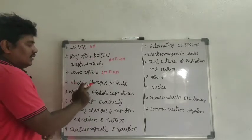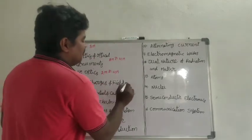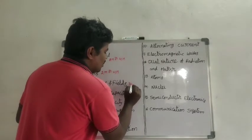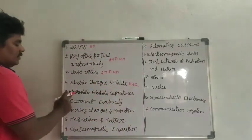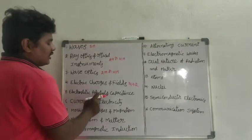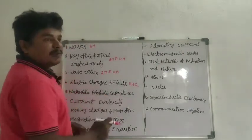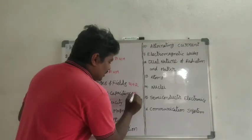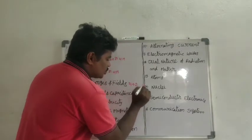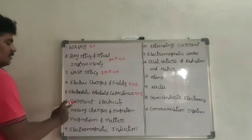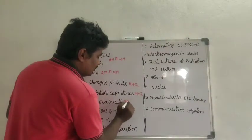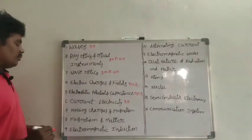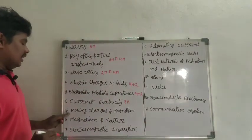The fourth chapter is electric charges and fields—we get 4 plus 2 marks. Fifth one, electrostatic potential and capacitance—we get 4 plus 2 marks. Next chapter, current electricity—we get 8 marks questions from this chapter.